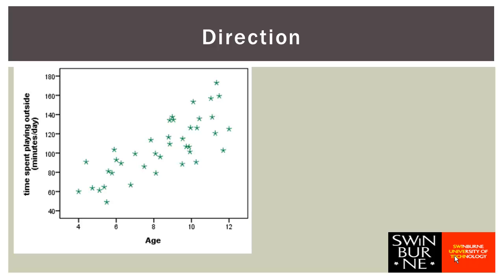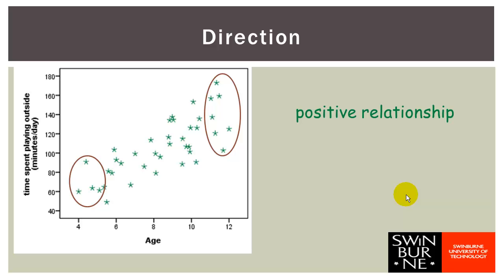Starting with direction: for this relationship between age and time spent playing outside, the older children tend to spend more time playing outside — or more formally, higher ages are associated with higher time spent playing outside. On the left-hand side of the graph we have children aged four to five spending maybe 60 to 90 minutes a day playing outside. On the right we have the older children aged 11 to 12 spending 100 to 180 minutes per day. The graph slopes upwards from left to right, and we call this a positive relationship.